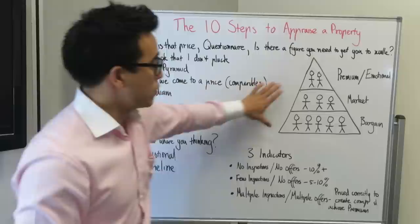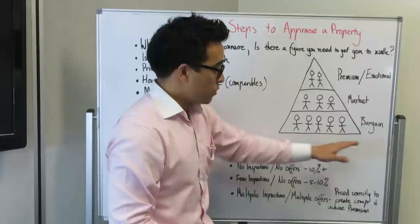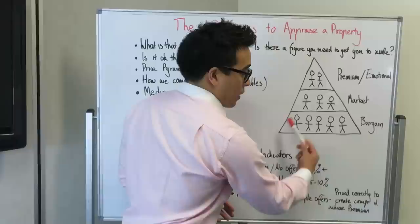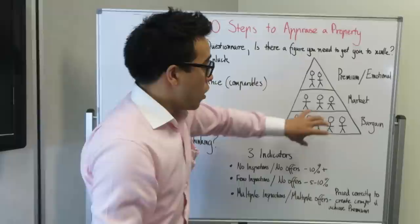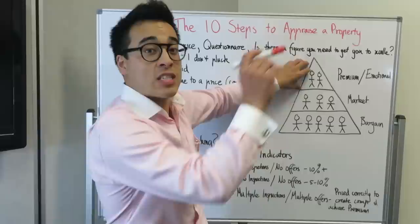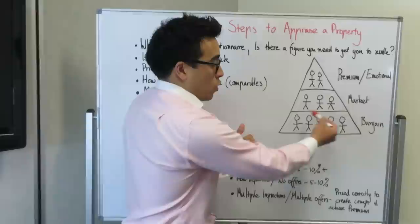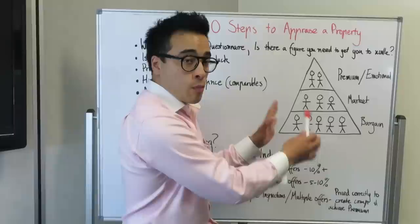Then we talk about the price pyramid. Mr. Vendor, as you can see, the higher you go up in the price pyramid, the less people are willing to pay that price. You start at the bottom with a bargain price, then market price, then premium or emotional price. We're not going to talk about the bargain price — there's no point hiring a real estate agent to get your bargain price because you can do that yourself. I'm not going to just talk about a premium price either — I'm going to show you how we can get the premium or emotional price if it's out there in the marketplace. What I prefer to talk about is the market value of the property, and we'll use facts and figures and comparable sales to come to that market value. But don't worry, Mr. Vendor — we'll still talk about how to get that premium price if it's out there. I don't promise a price; I promise a process.